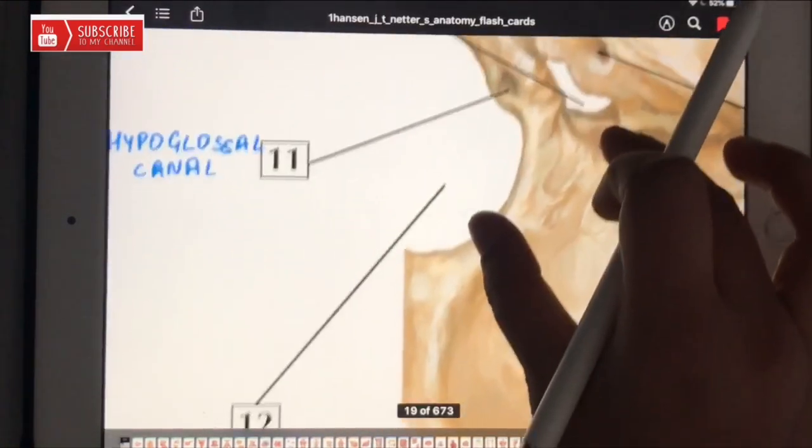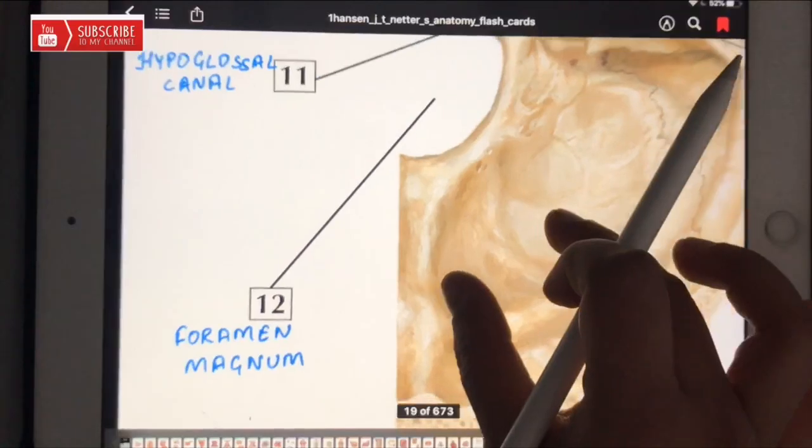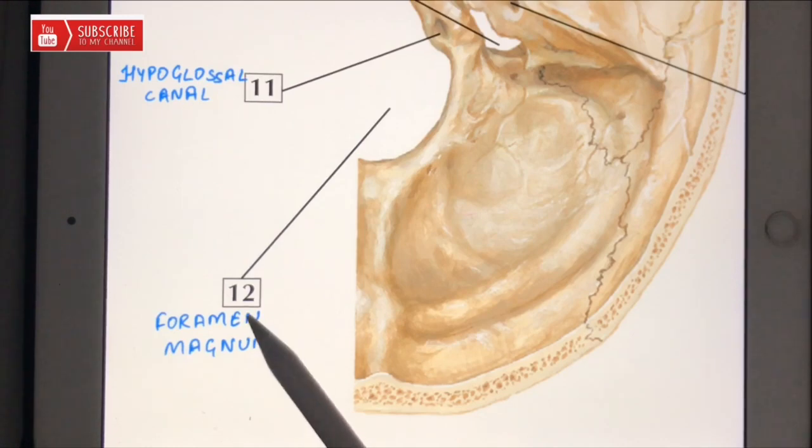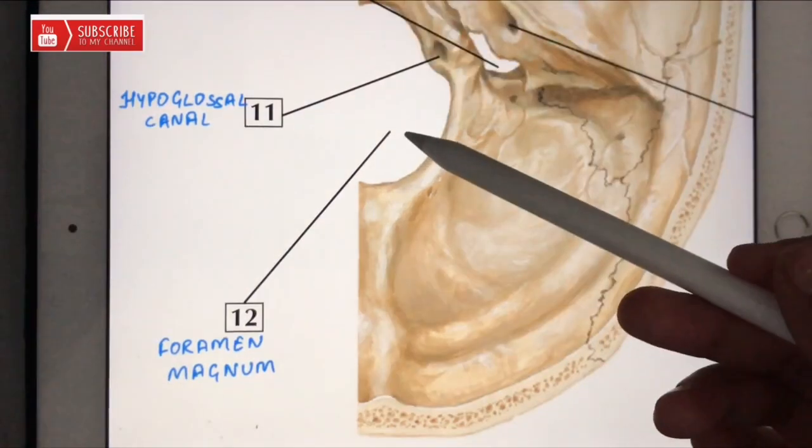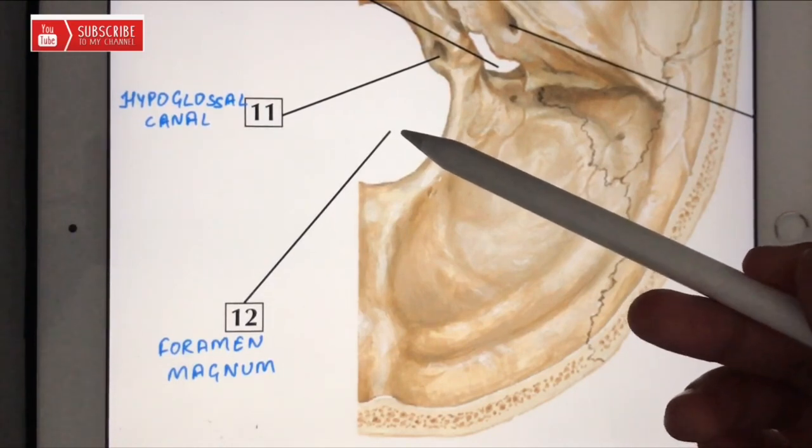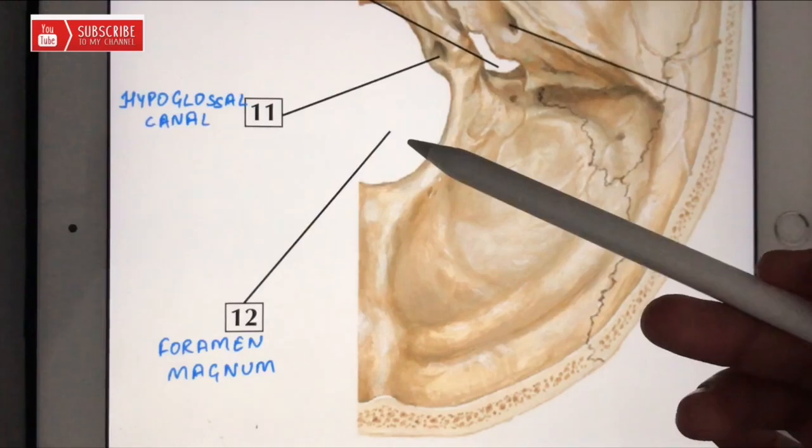Now comes to the twelfth one. Number twelve is foramen magnum. So let's see what are the structures which are passing through foramen magnum. The spinal cord, which is an extension of the medulla oblongata, passes through the foramen magnum as it exits the cranial cavity.